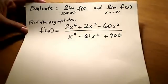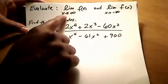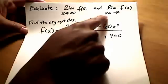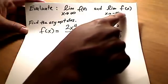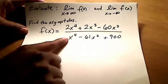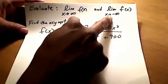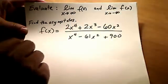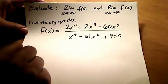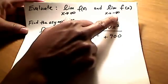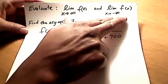This is a calculus problem where we need to find the limit as x approaches infinity and x approaching negative infinity for a given rational function. What we're really looking for with these two limits are the horizontal asymptotes — as we go off to negative or positive infinity, we're looking for horizontal asymptotes.